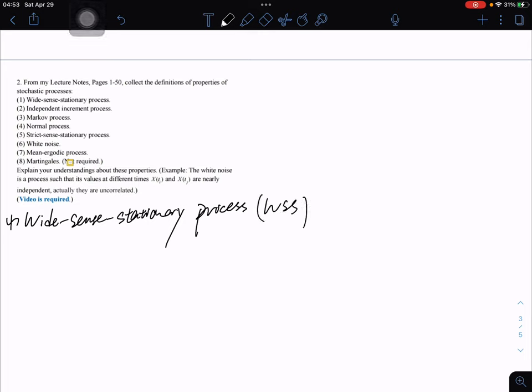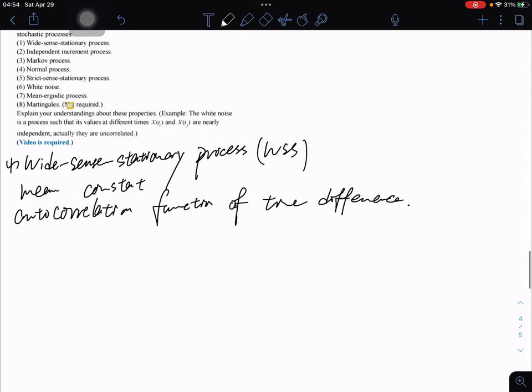So, wide sense stationary process is a stochastic process if its mean is constant and autocorrelation is a function of time difference. Mean constant, autocorrelation function of time difference, right?